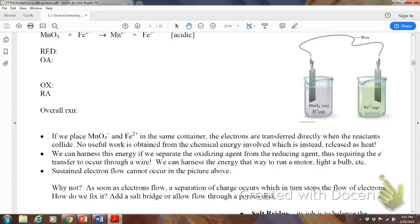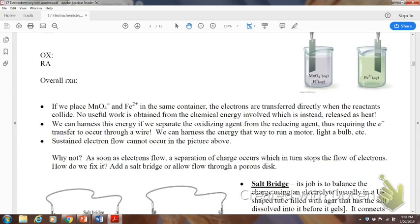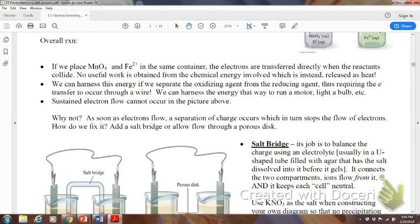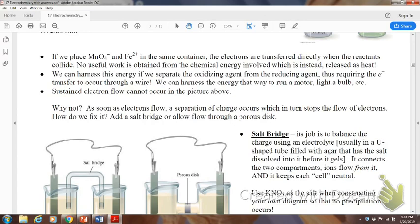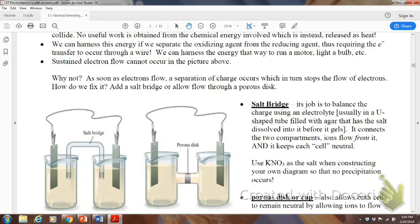So, here's the overall reaction. We did that. If we place the permanganate and the iron 2 in the same container, the electrons are transferred directly, but no useful work is obtained. So, we would just get it released as heat. But, if we put that salt bridge in there and we connect that, now we can harness that energy because we're going to separate what's being oxidized and reduced and we're going to use that to go through the wire from the anode to the cathode. If you do not have a salt bridge, it will not happen. So, if I were to set this up and take out that salt bridge or block that porous disk, nothing would happen. It would just stop reacting. So, you've got to have that salt bridge.